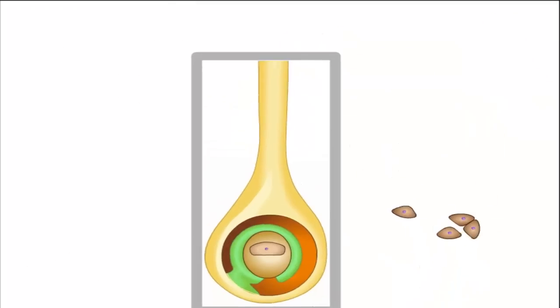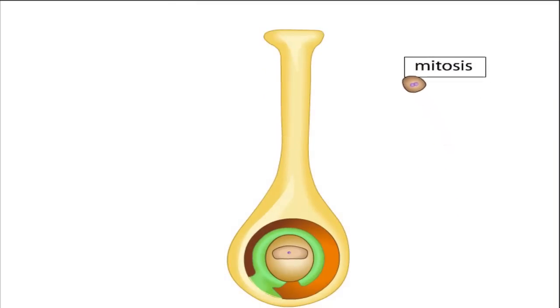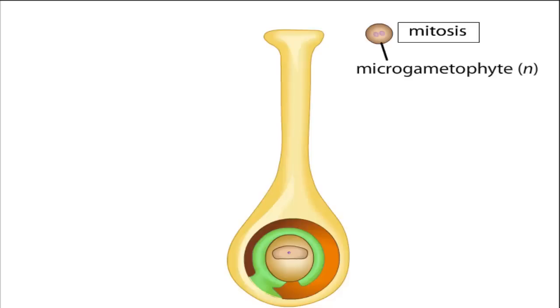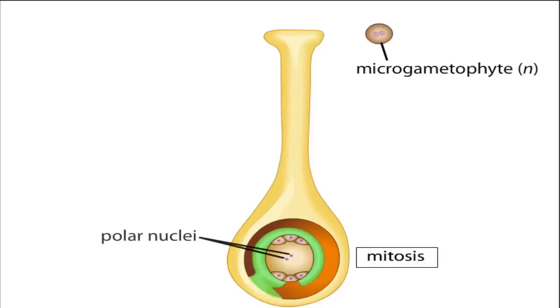Each microspore undergoes a mitotic division and differentiation to produce a pollen grain, the haploid male gametophyte called a micro-gametophyte. The surviving megaspore divides by mitosis to produce seven haploid cells. One large, centrally located cell contains two nuclei called polar nuclei. Another cell is the egg. The seven-celled structure makes up the female gametophyte called the megagametophyte.